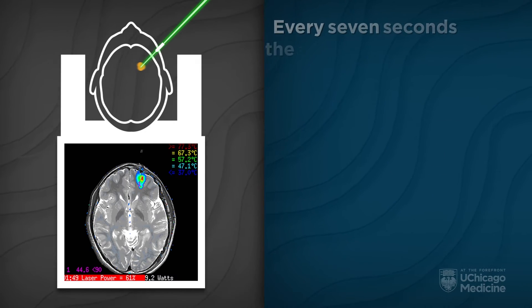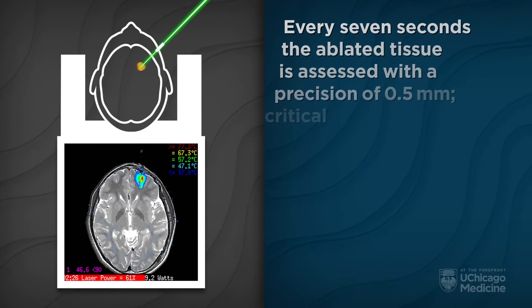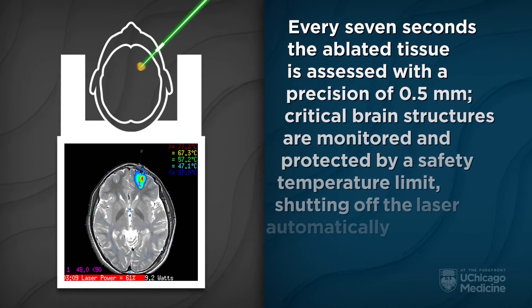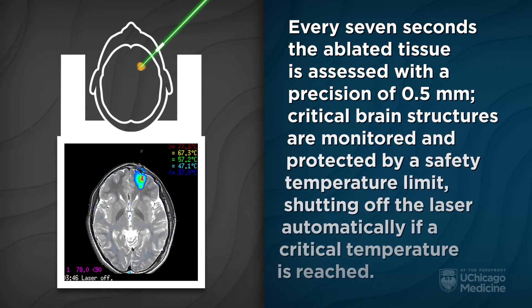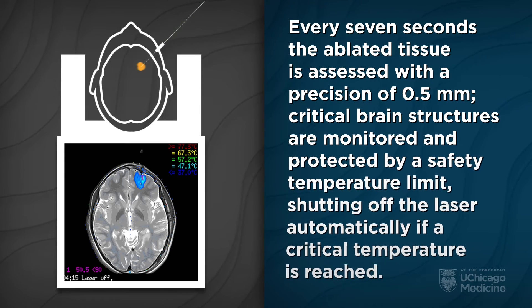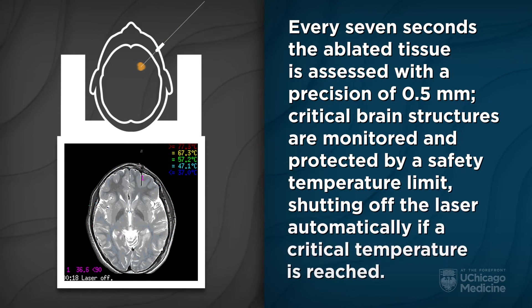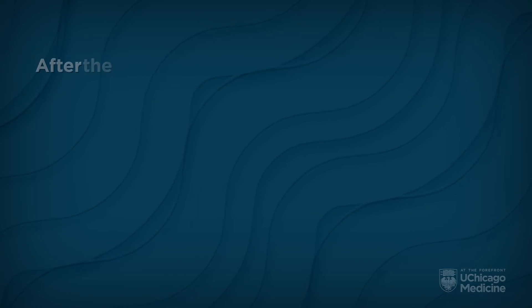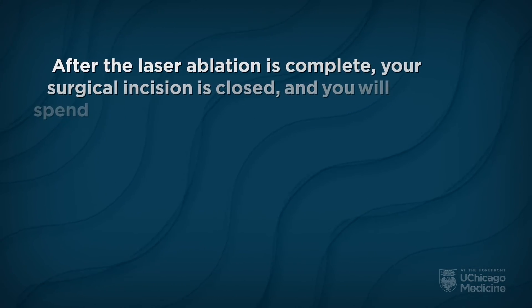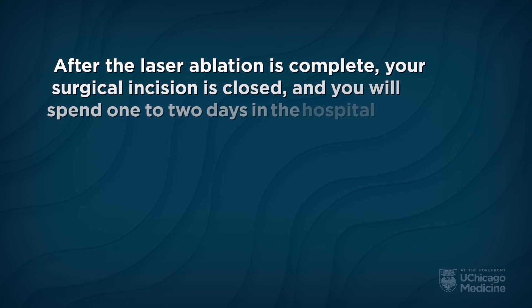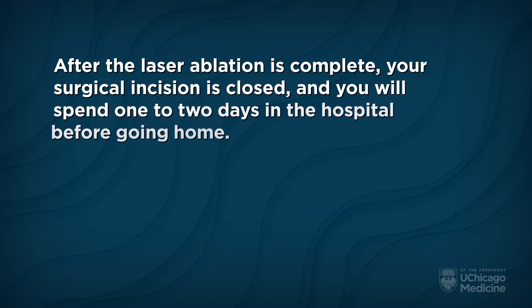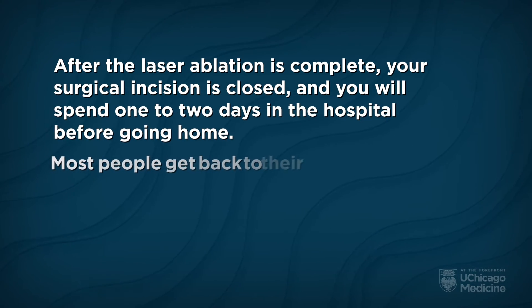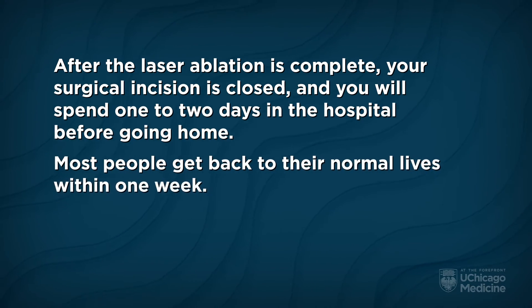Every seven seconds, the ablated tissue is assessed with a precision of 0.5 millimeters. Critical brain structures are monitored and protected by a safety temperature limit, shutting off the laser automatically if a critical temperature is reached. After the laser ablation is complete, your surgical incision is closed and you will spend one to two days in the hospital before going home. Most people get back to their normal lives within one week.